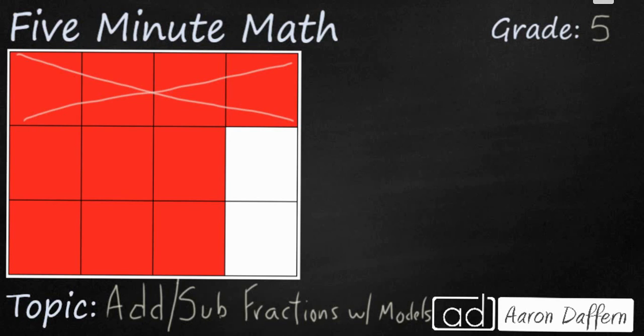Looking at the figure you should notice first off that it has 12 pieces so that's going to be our denominator representing how many total pieces there are, and there are 10 of those pieces shaded in red so that's our numerator, our top number.